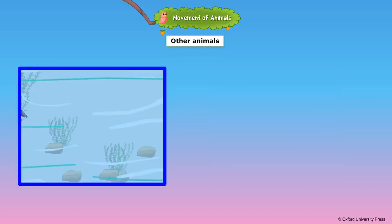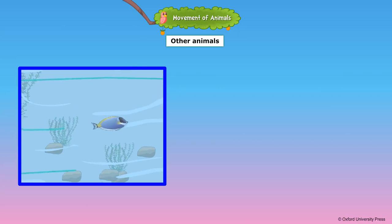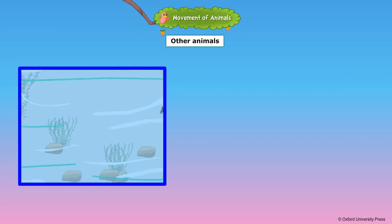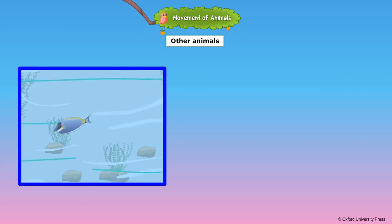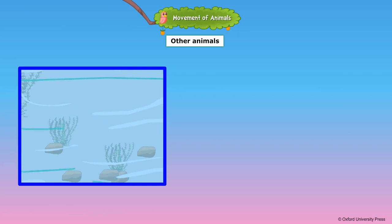The boat-shaped body of the fish enables it to move through water. It has fins and a tail. A fin helps the fish to swim and the tail helps it to change direction.